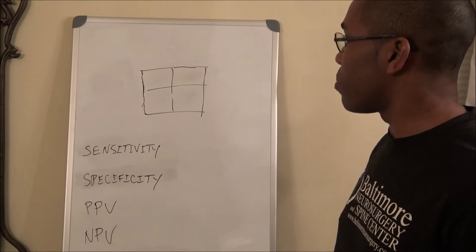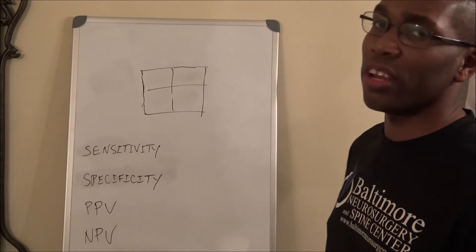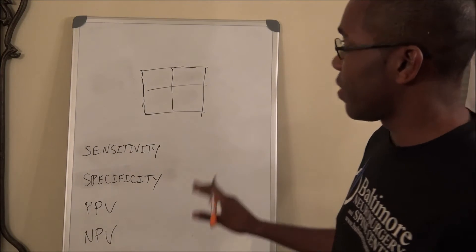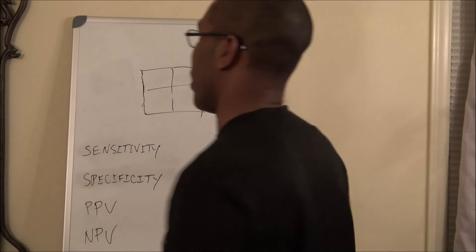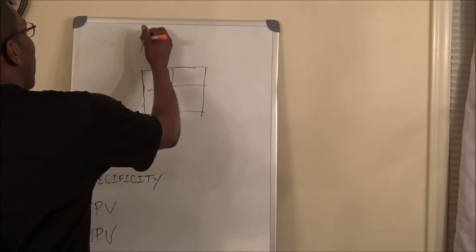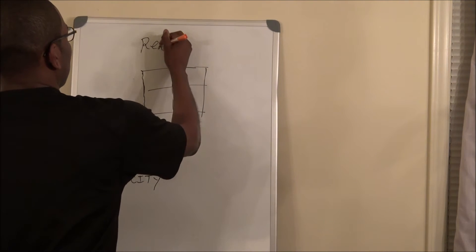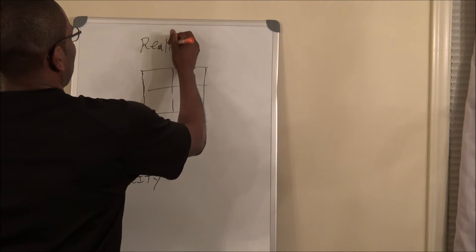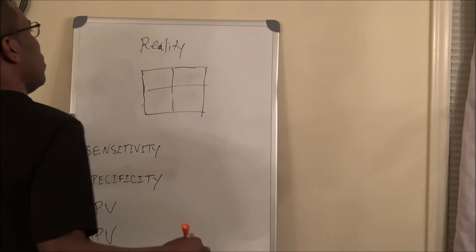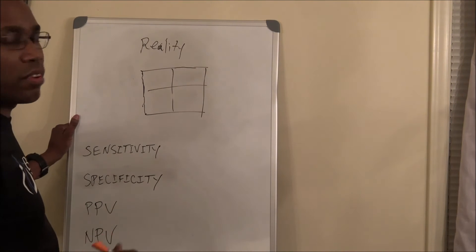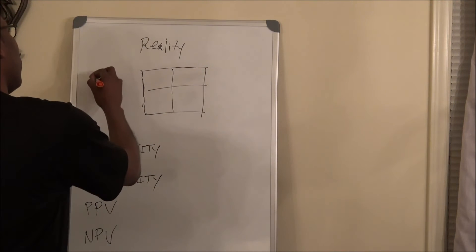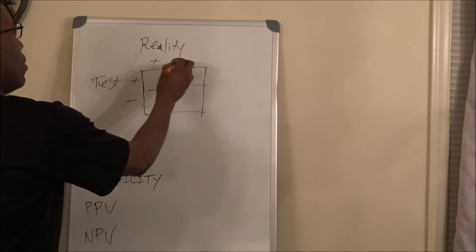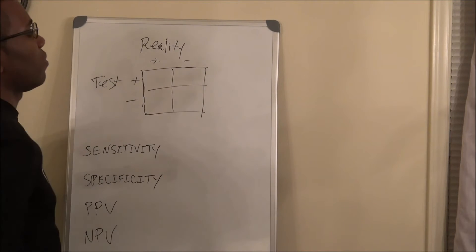In working out any of these problems, the first thing you need to do is to make a 2x2 square. On the top of that square you're going to write 'in reality,' and on the left side of the square you're going to write 'test.' You have positive, negative, positive, and negative.